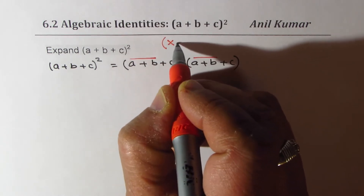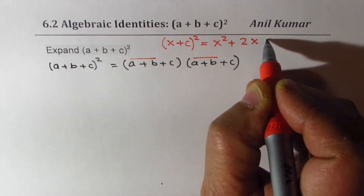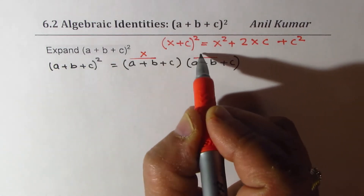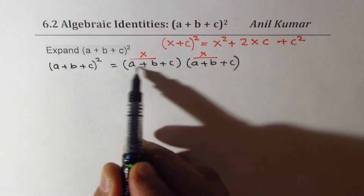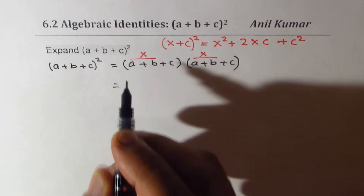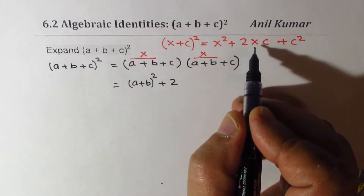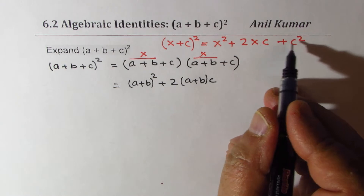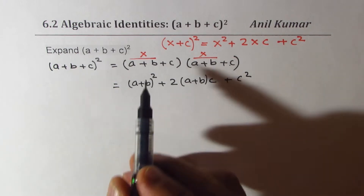Once we do that, we apply the formula: (x+c)² equals x² plus 2xc plus c². So we treat (a+b) as x and use this formula. x² means (a+b)², and then 2 times x times c means 2 times (a+b) times c, and then c².